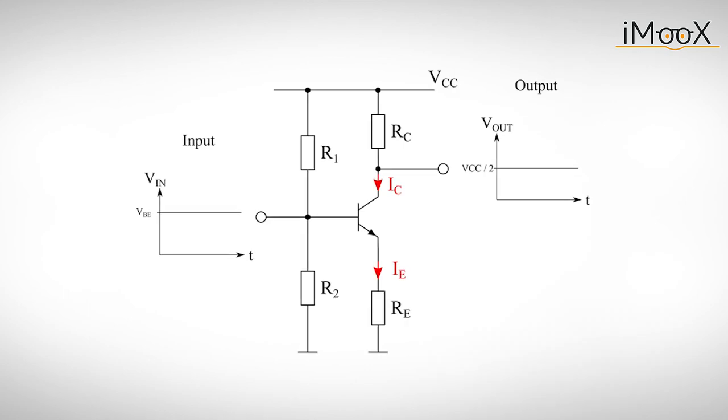Now let's assume that we have already biased the input so that the output voltage is half of the supply voltage. This should guarantee the largest possible output swing for a small AC signal at the input. Now imagine a small AC voltage, delta VBE, at the input of the amplifier. The emitter will follow the change of the voltage so that delta VE is equal to delta VBE.